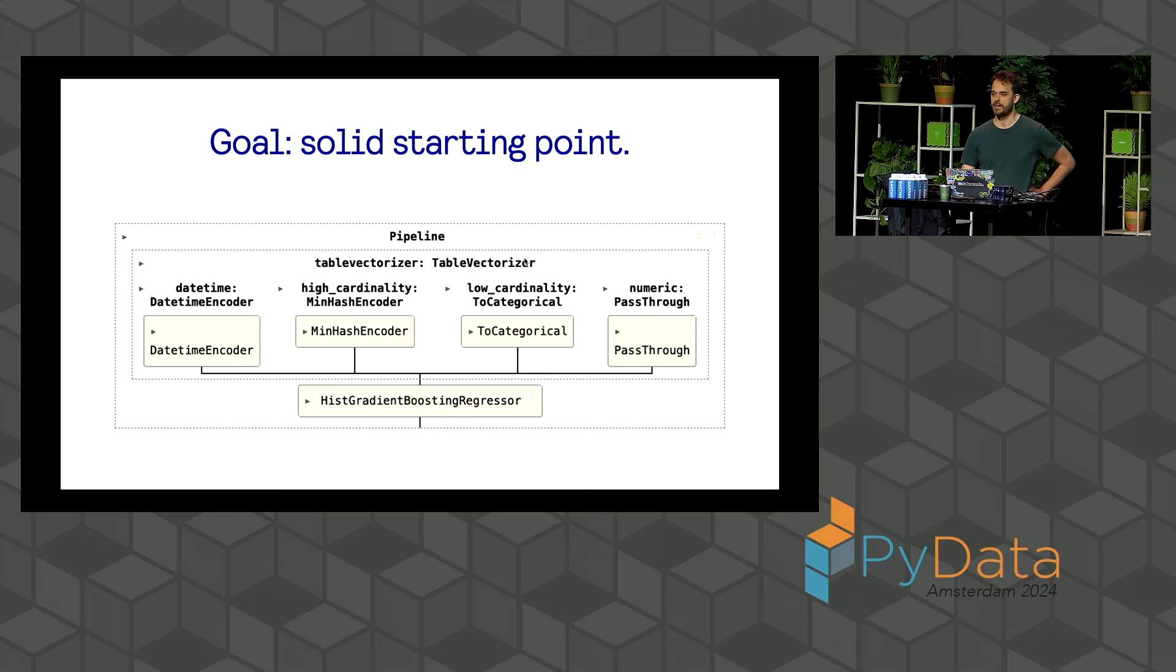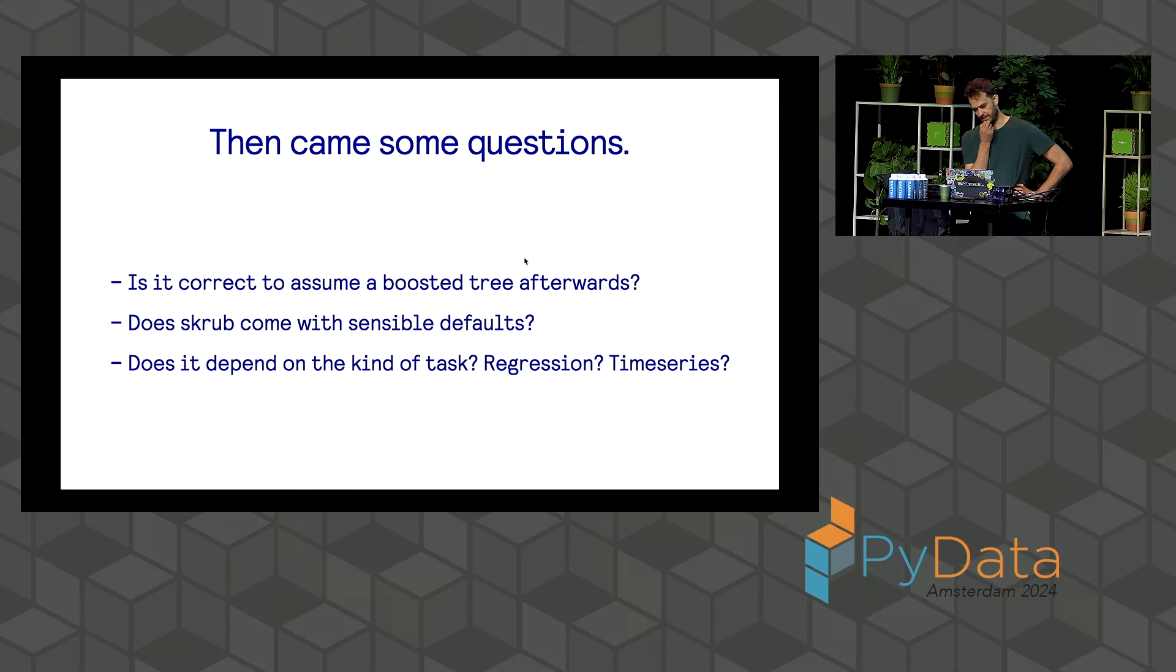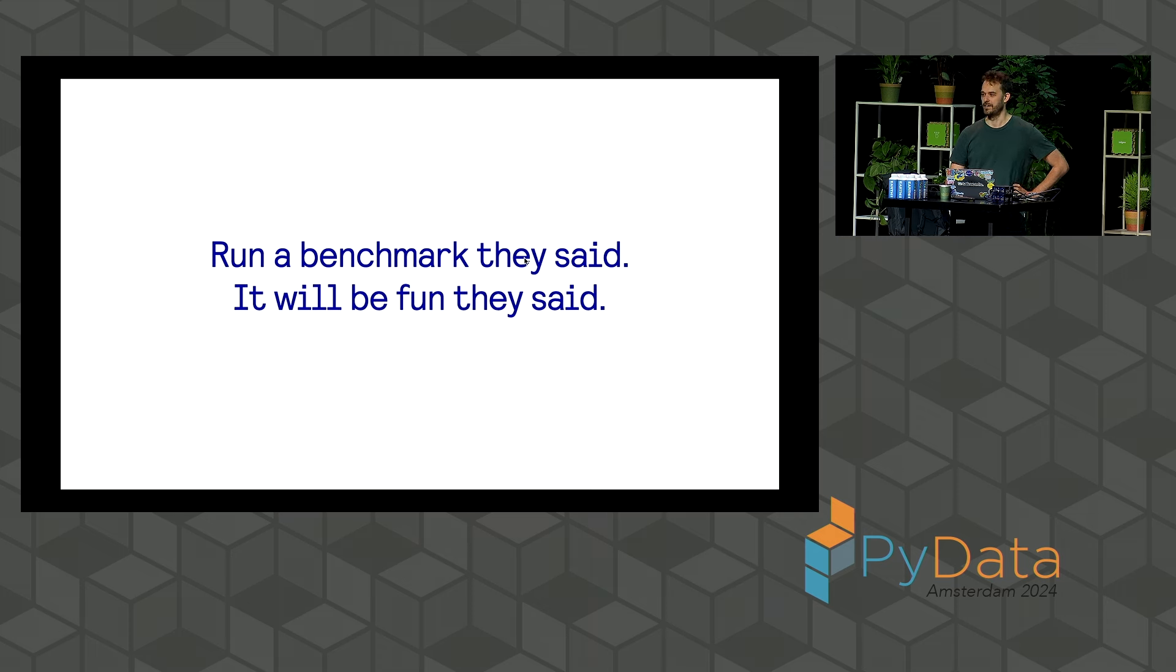So this is all well and good, but then people in the Slack channels start asking questions. They start asking questions like, hey, that table vectorizer back when we were working on it, it does assume that you're always going to want to use a boosted tree afterwards. And for a lot of people, that might be a fair assumption, but is that true for everything? And also, scrub comes with some sensible defaults, we think, but does that depend on the kind of task? Like, do we need different defaults for classification? Do we need different defaults for regression? Or are time series a different beast altogether as well? I was the person asking these questions, and then people came to the conclusion, like, Vincent, you should probably just benchmark this. Run a benchmark, they said. It'll be fun, they said.